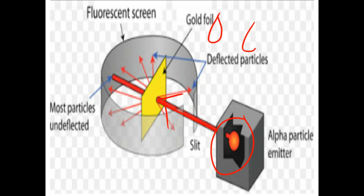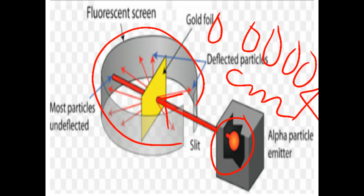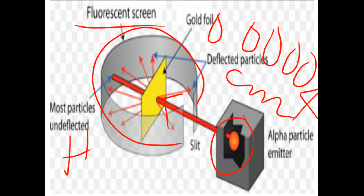Rutherford used a radioactive material polonium and bombarded alpha rays — alpha particles — through a gold foil which was only 0.00004 centimeters thick. He observed the traces on a fluorescent screen of zinc sulfide. Alpha rays are positively charged helium nuclei, and each alpha particle was doubly positively charged.